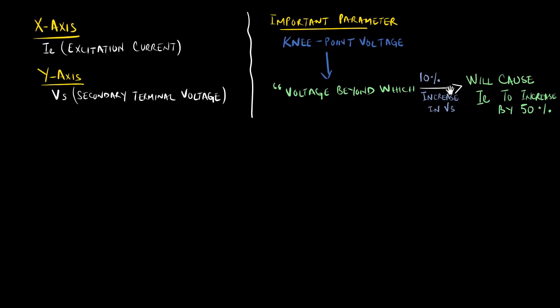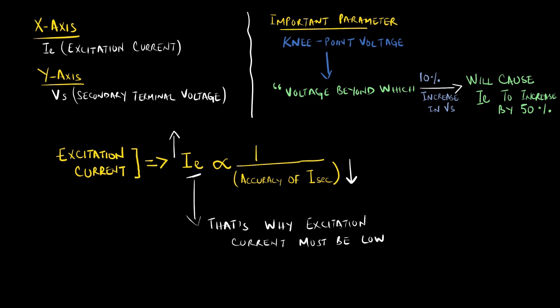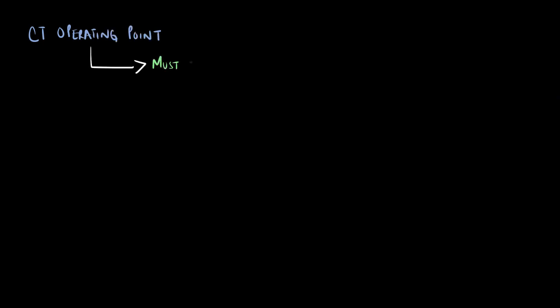We can recall from our discussion in previous parts, the greater the excitation current, the lower the accuracy of the output secondary current. We want the excitation current to be as low as possible, and it is exactly why the normal CT operating point should remain below the knee point voltage.